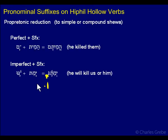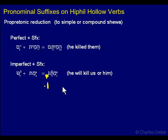Qamets, which marks hollow verbs, is what we have for the imperfect in the Hiphil, and it reduces to a vocal sheva. So, for both Qal and Hiphil verbs, if you add pronominal suffixes to Qal and Hiphil hollow verbs, you get this pretonic reduction where the prefix vowel will reduce.